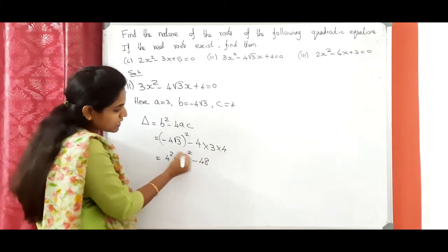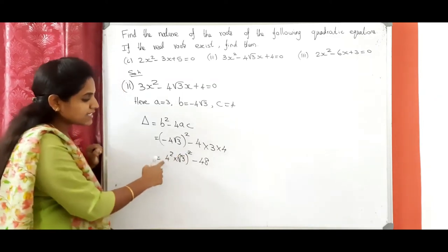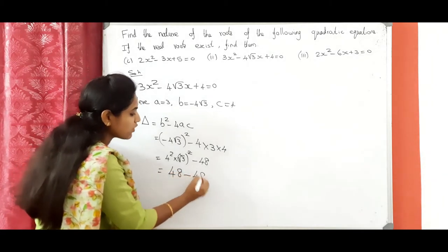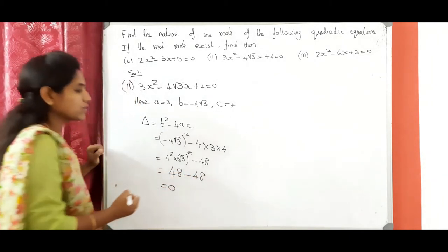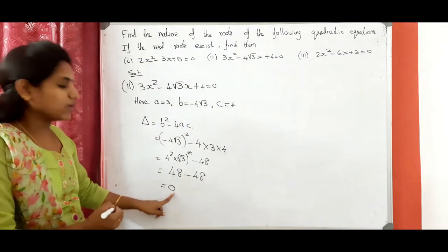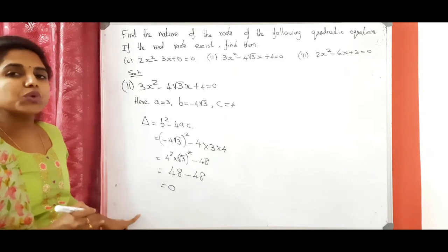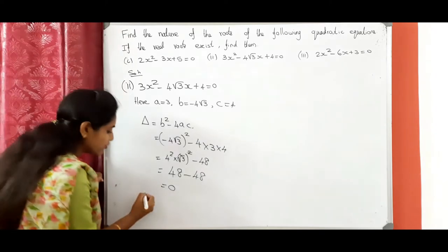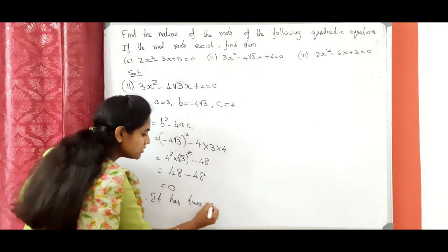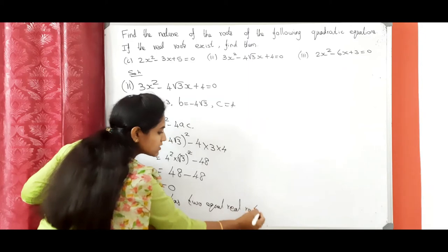The square and square root cancel, and 4 squared equals 16. So 16 into 3 equals 48 again. Therefore, 48 minus 48 equals 0. So b squared minus 4ac value is 0, which means the nature of the roots is two equal real roots.